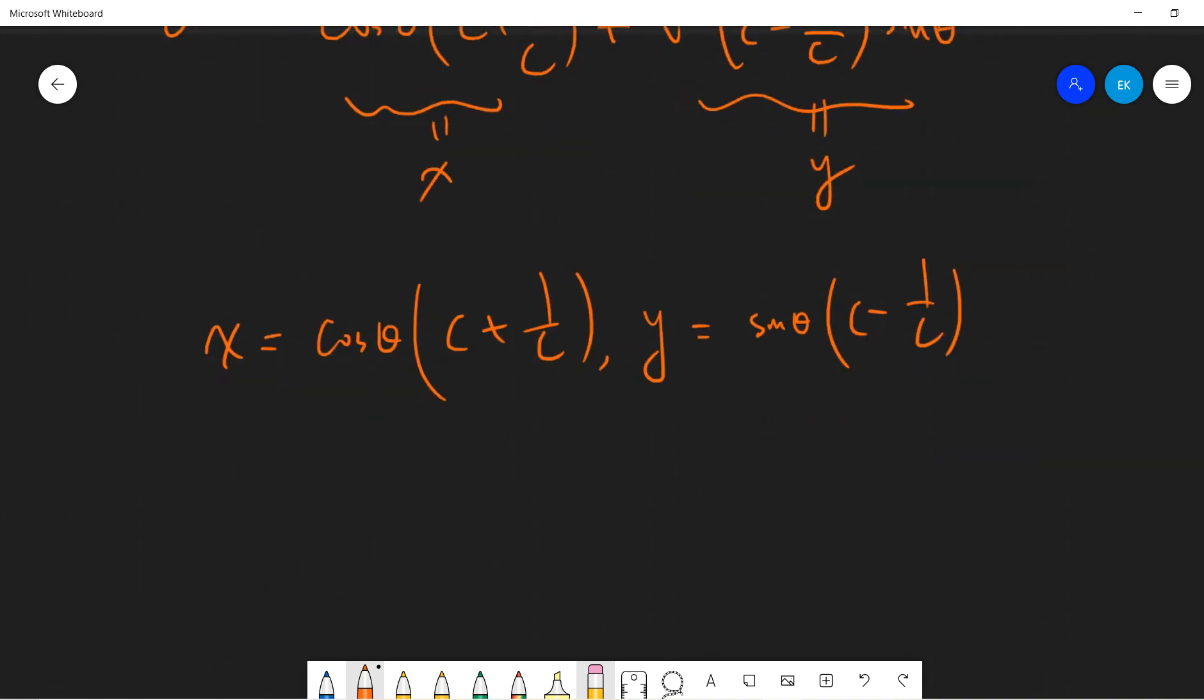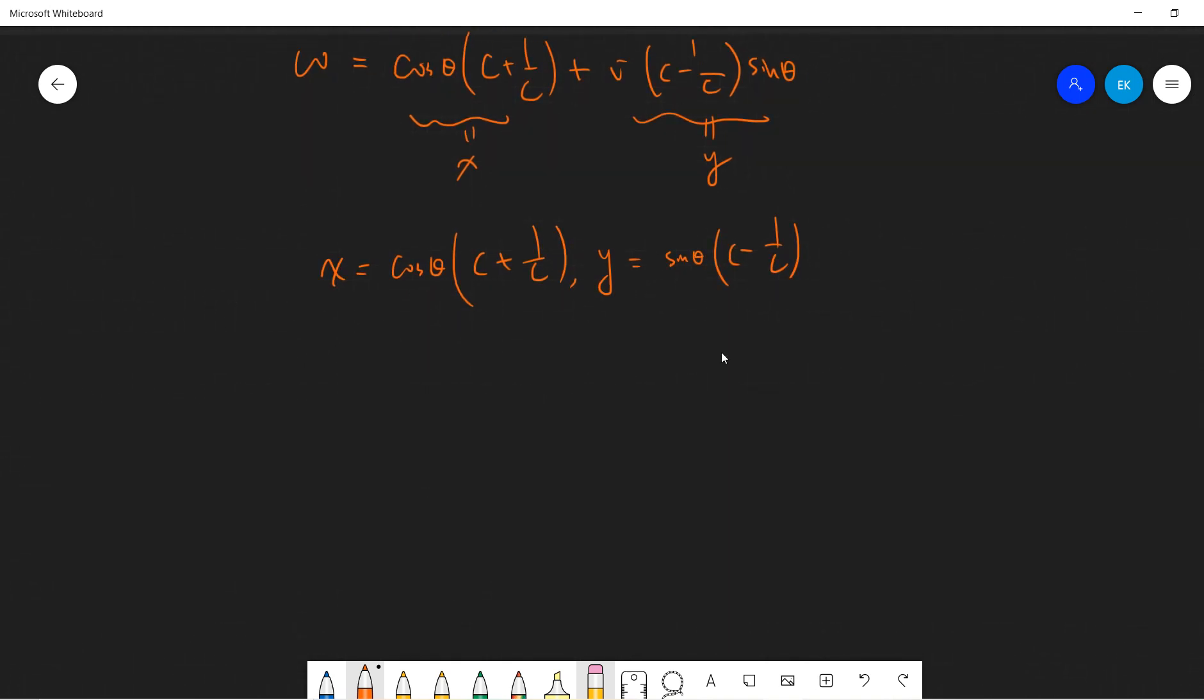OK, so you notice that x is cosine theta (c plus 1 over c) and y is sine theta (c minus 1 over c). OK, so I think everybody knows in junior high school or something. Right. You know that if x squared over (c plus 1 over c) squared plus y squared over (c minus 1 over c) squared. So this is cosine squared. This is sine squared. Right. So their addition will be 1. Right. So this is the ellipse.